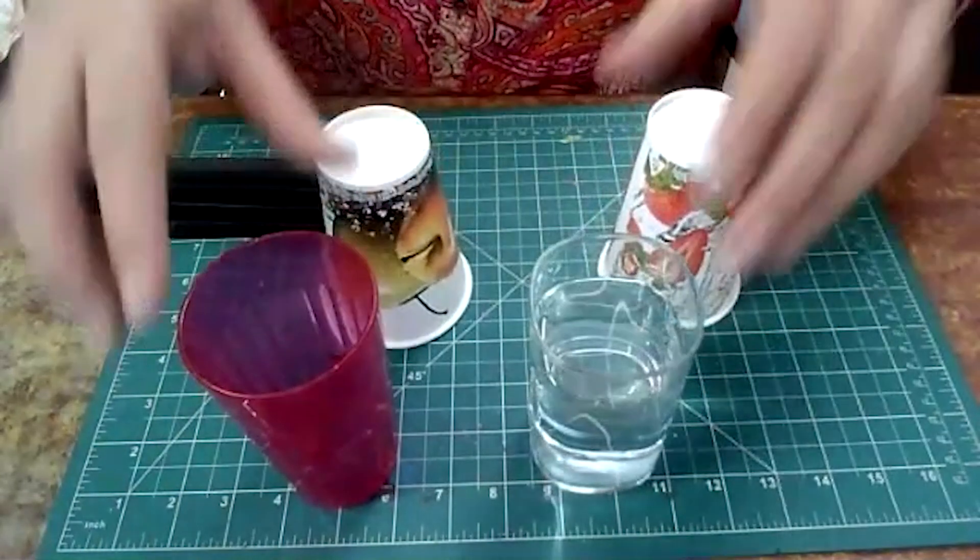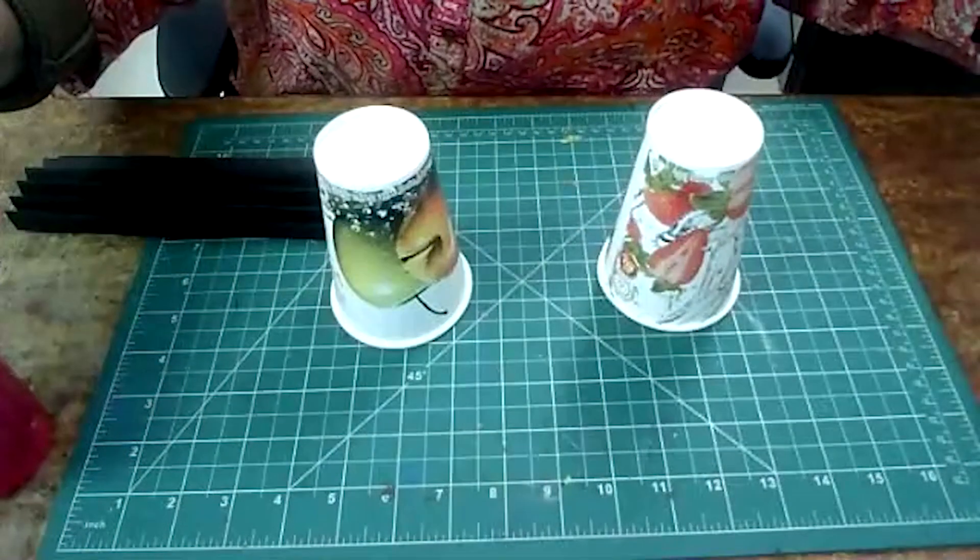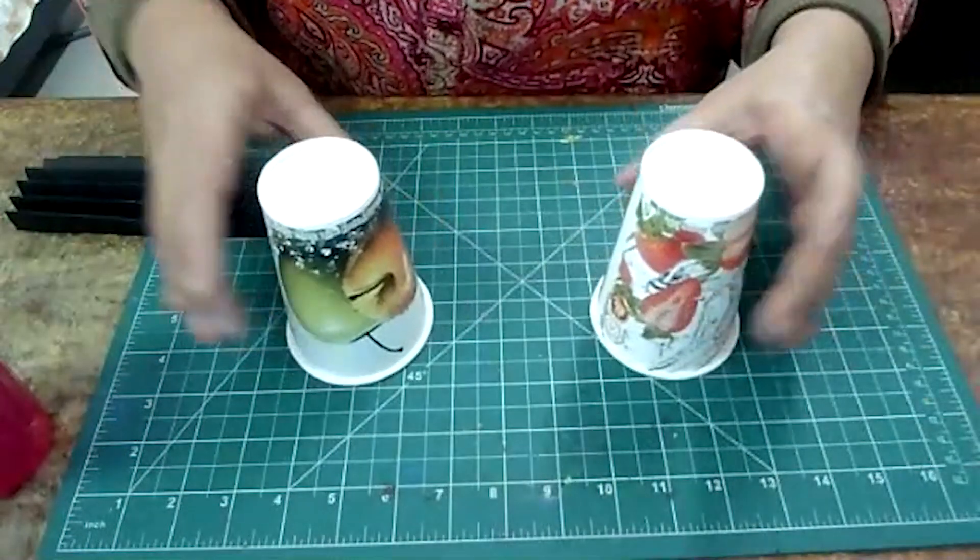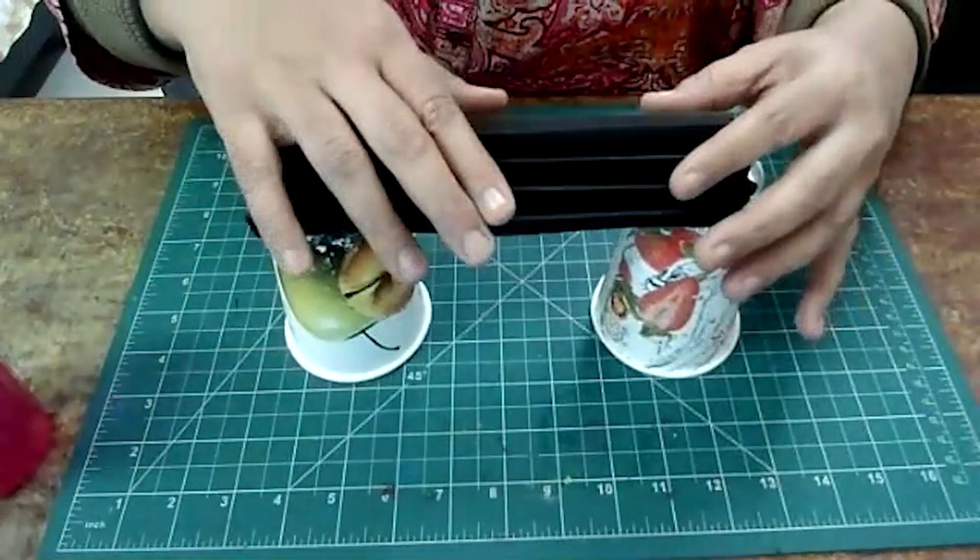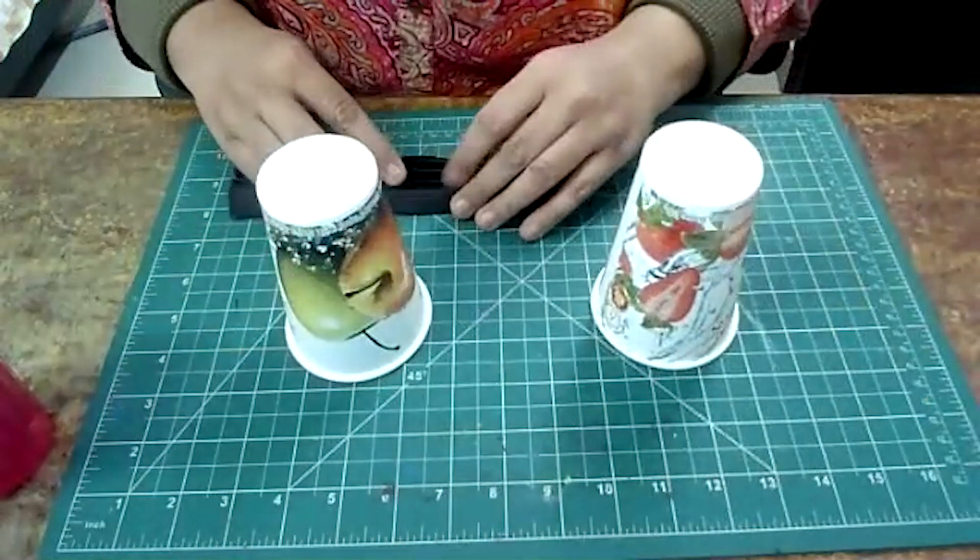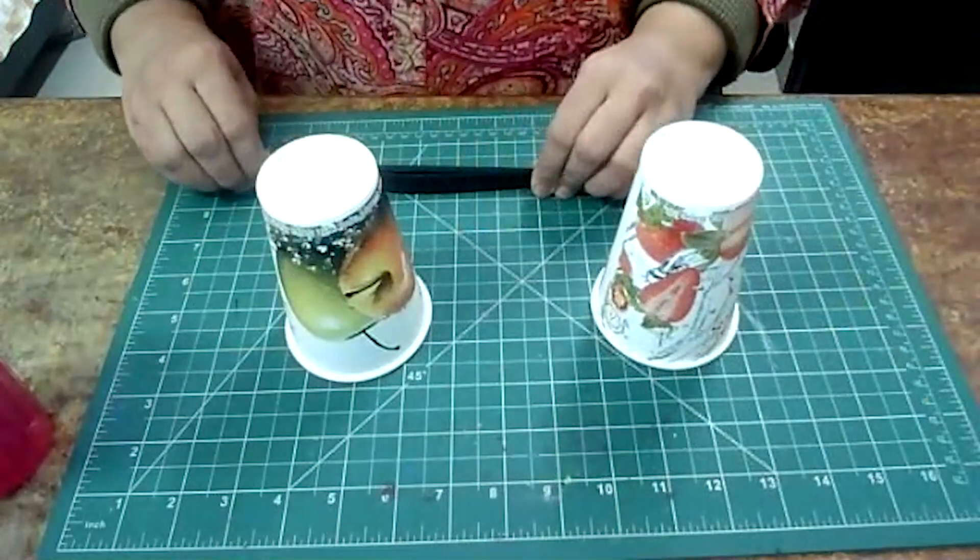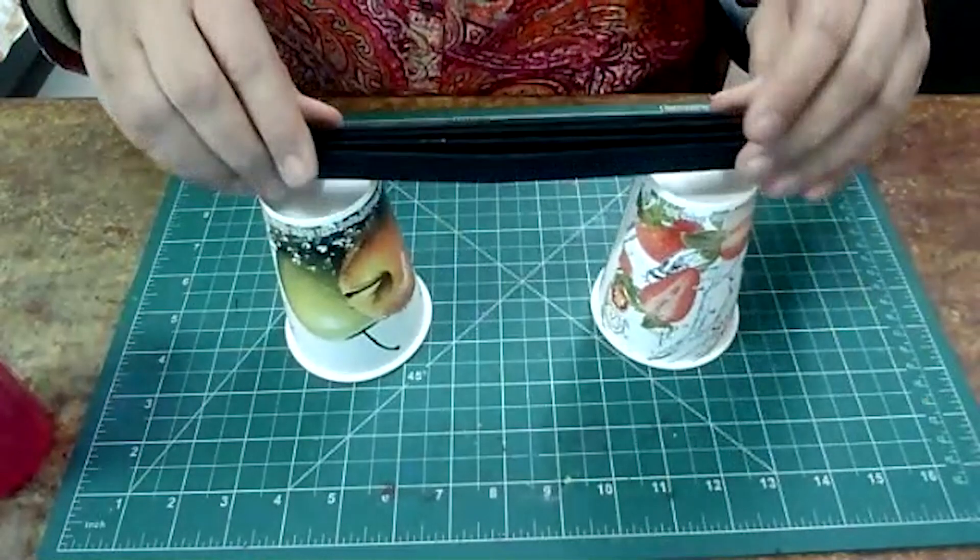We are going to turn the tumblers upside down and we are just going to simply press it nicely, just press it nicely and place it here.